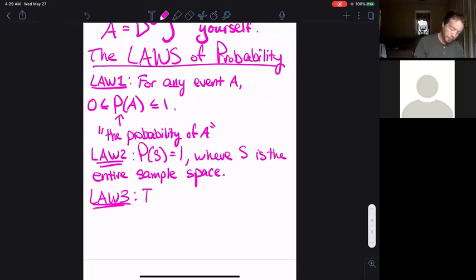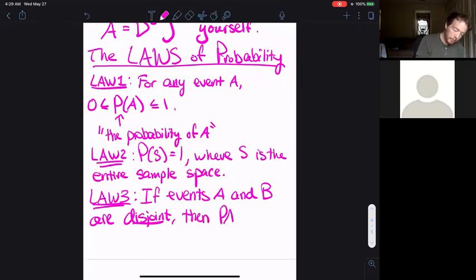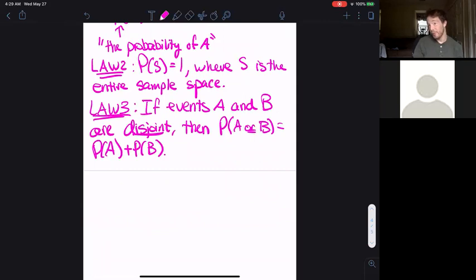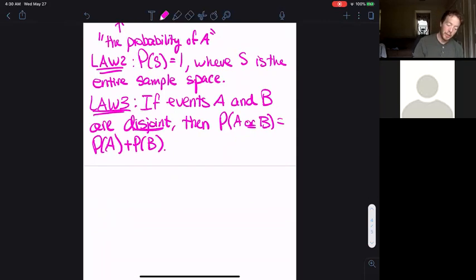Law 3: If events A and B are disjoint, then probability of A or B, of either of them happening, is equal to the probability of A plus the probability of B. This is something we're going to work with and motivate a little bit more, but if you determine that two events are disjoint, you can say that the probability of either of them happening is just the sum of their respective probabilities.